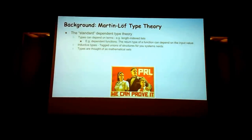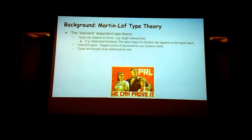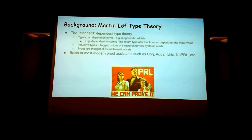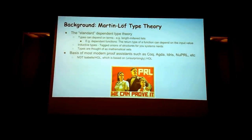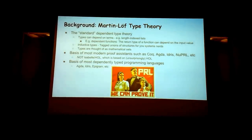Types are thought of as mathematical sets in normal type theory — you just have a collection of objects, and each possible value of the type is an element of that set. It's the basis of most modern proof systems, such as Coq, Agda, Idris, Nuprl, and so on. But notably it's not the basis of Isabelle/HOL, which is based on HOL. It's also the basis of most dependent type programming languages such as Agda, Idris, and Epigram.